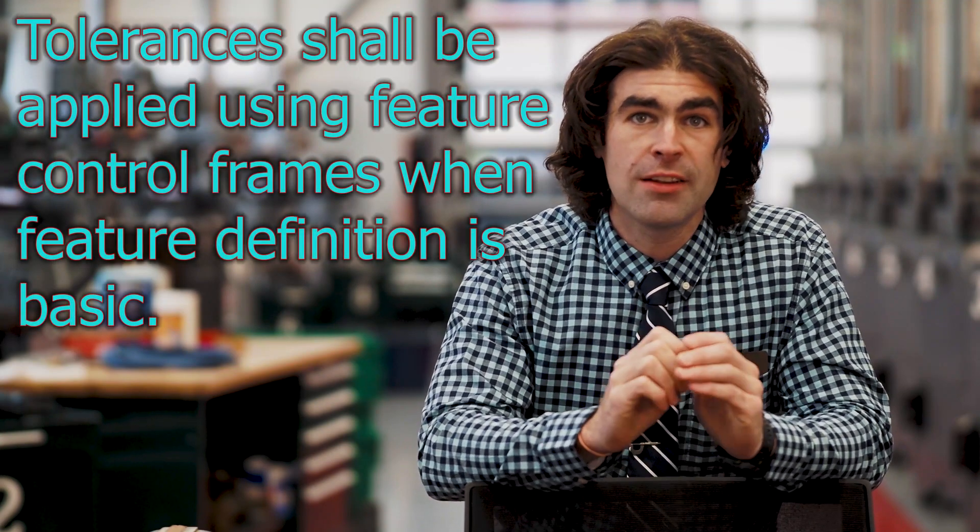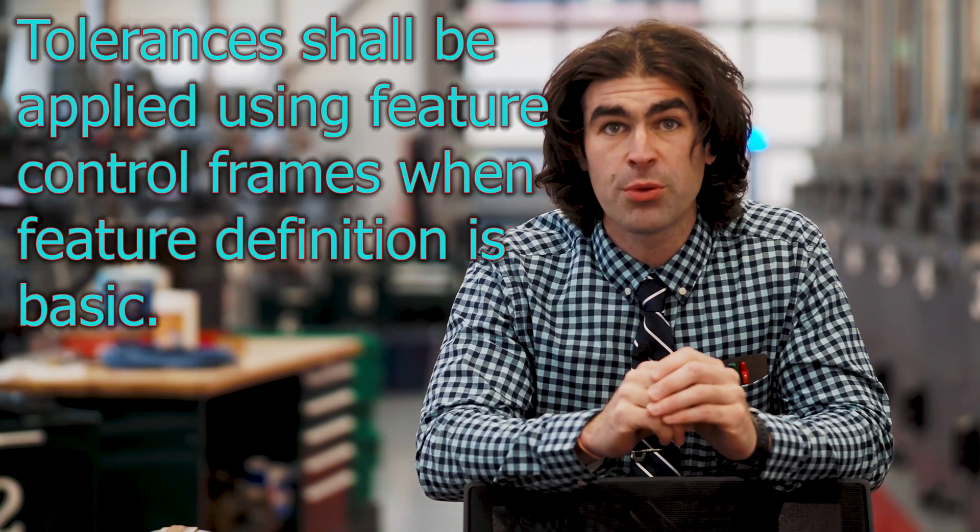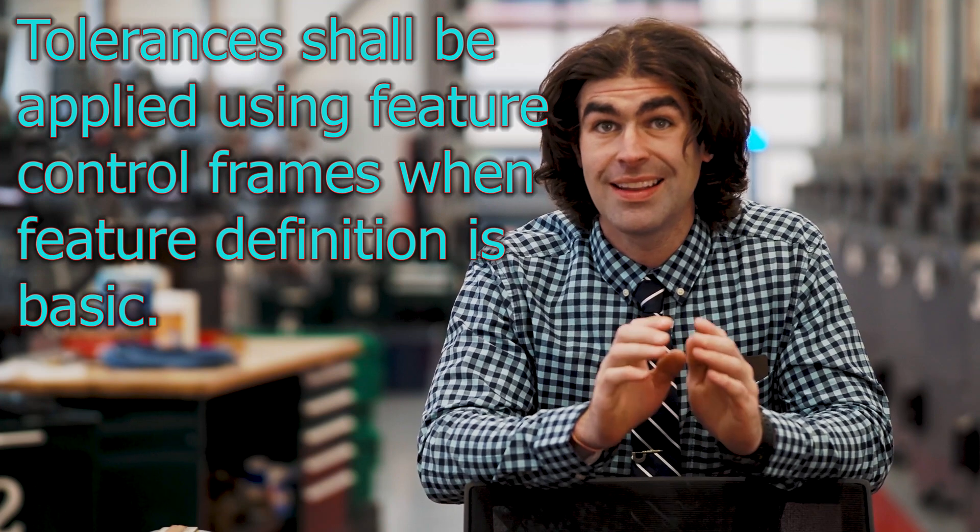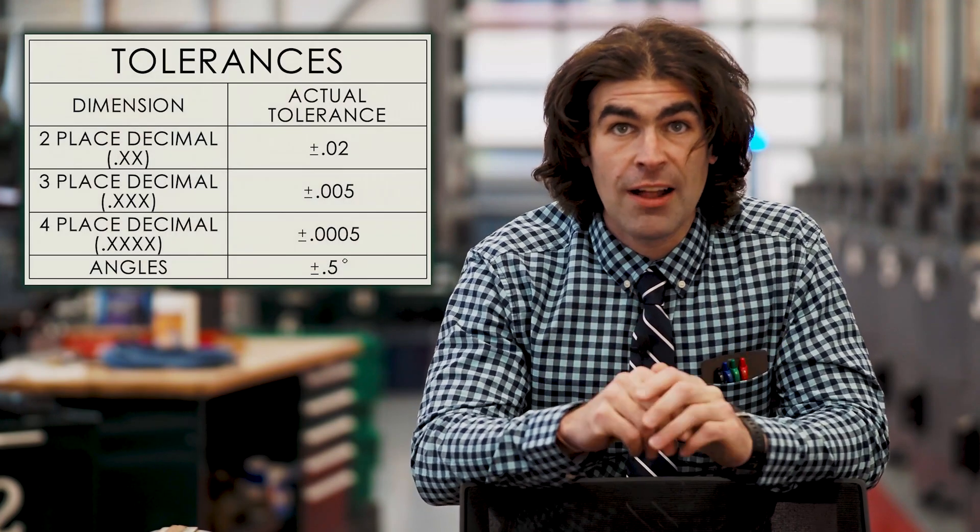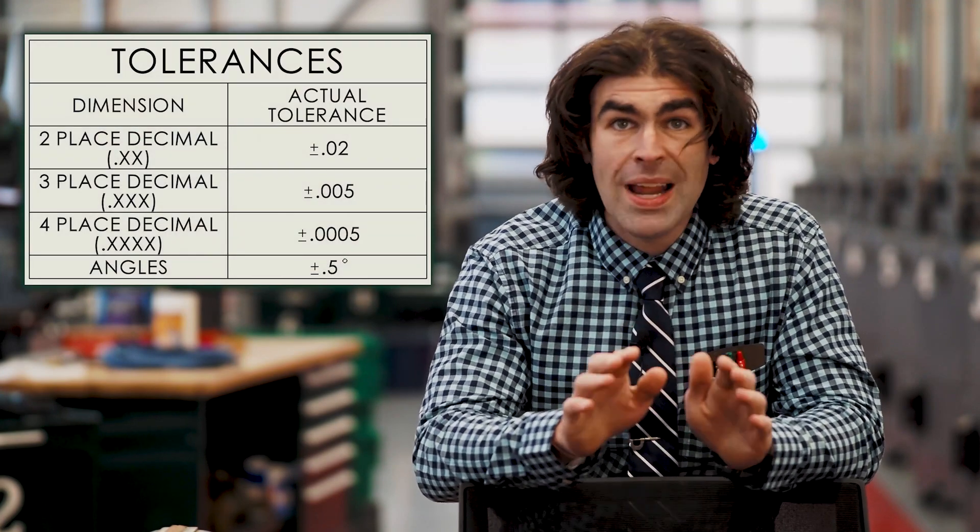Next up, sentence number three. Tolerances shall be applied using feature control frames where feature definition is basic. In this case, shall, again, means business. There are no exceptions to this one. Features dimensioned by basic dimensions get their tolerance from the feature control frame. What they call title block tolerances do not apply to basic dimensions.